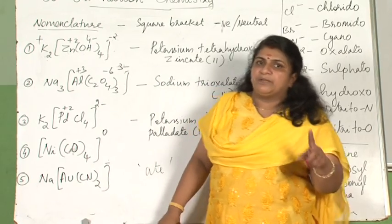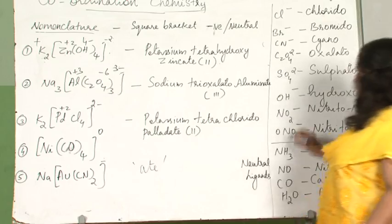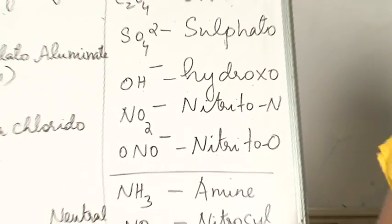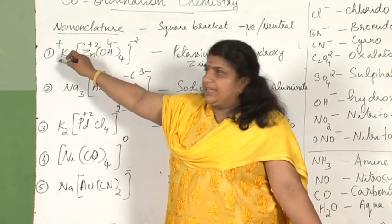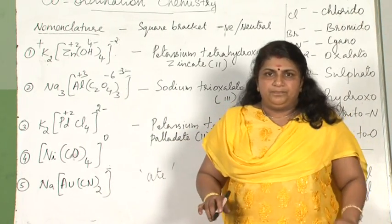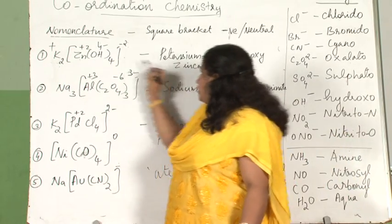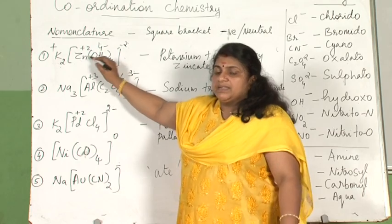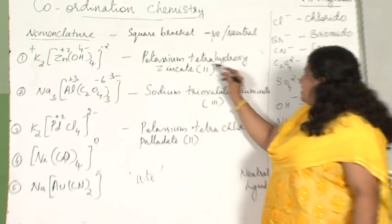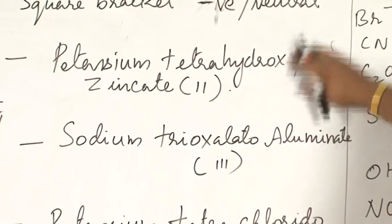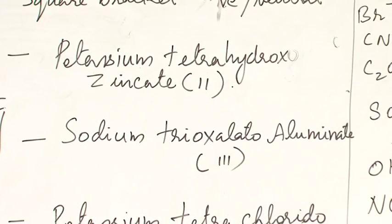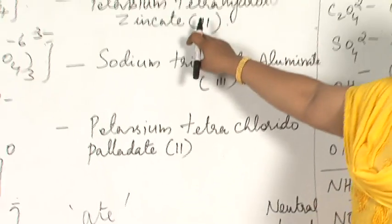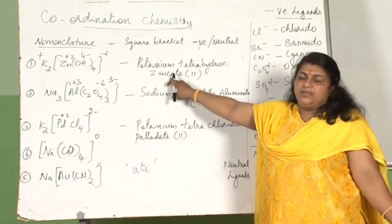There are four ligands and it is a homoleptic complex — same type of ligands. OH is called hydroxo. Four hydroxo ligands means tetrahydroxo. To name the complex, start from the left, then write the ligand first, then the metal. So it is: potassium tetrahydroxozincate. Since the square bracket is negative it ends with '-ate': tetrahydroxozincate. The oxidation state of the central metal ion is written as a Roman numeral immediately after the metal name.